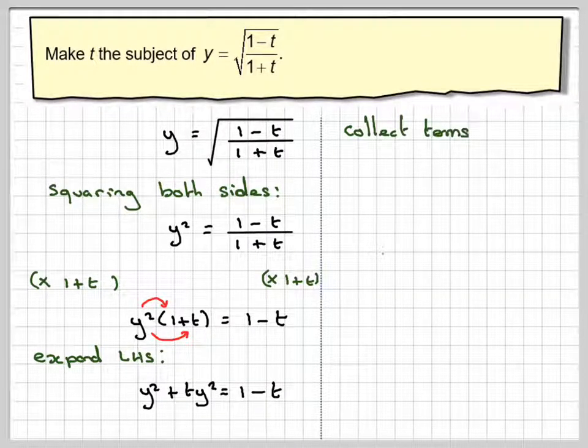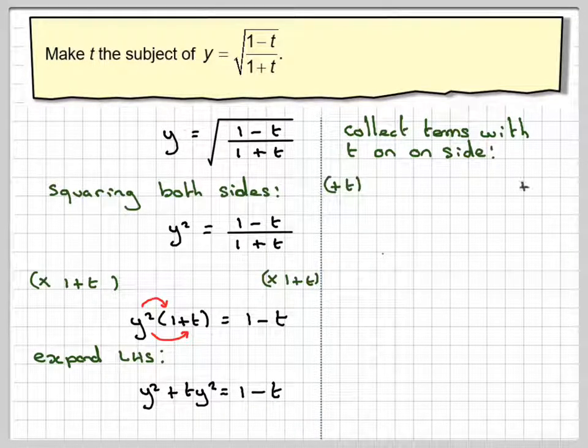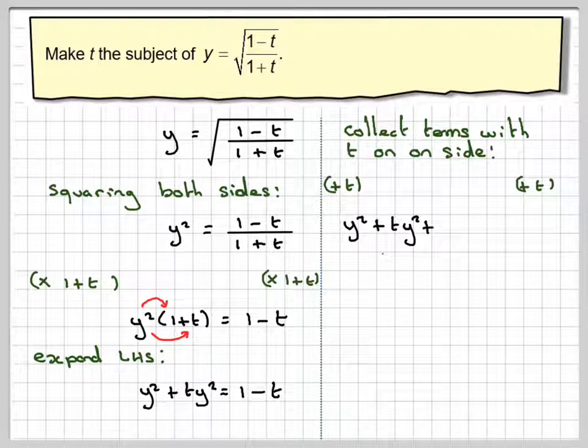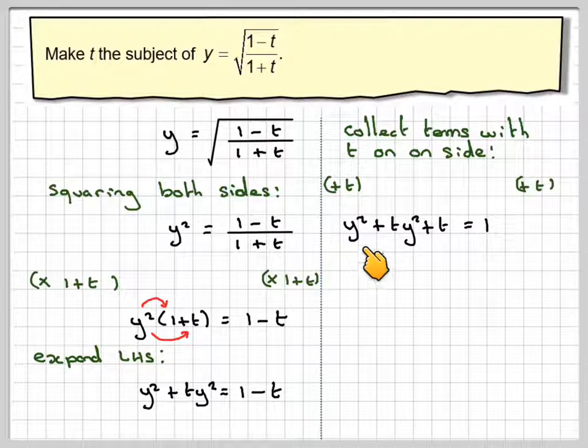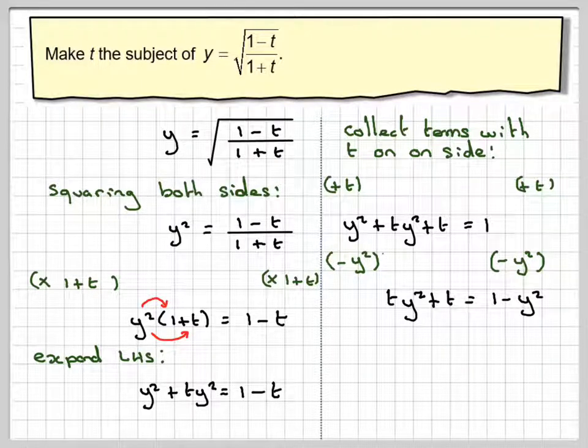So collect the like terms with t on one side. We're going to add t to both sides. So we get y squared, ty squared plus t is equal to 1. And then we're going to subtract the y squared from both sides. So we get ty squared plus t is equal to 1 minus y squared.